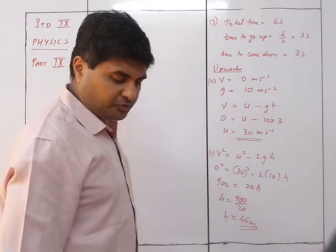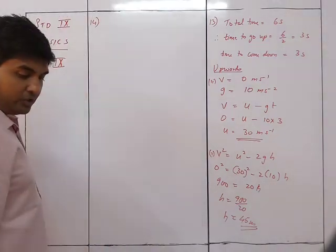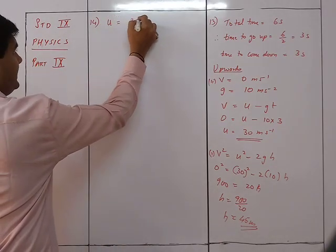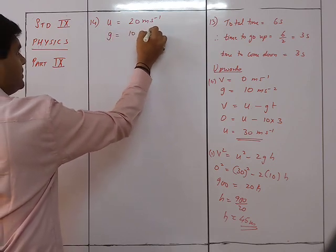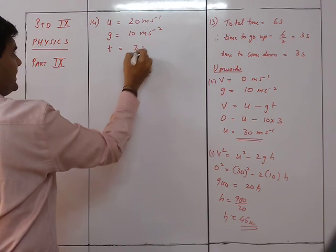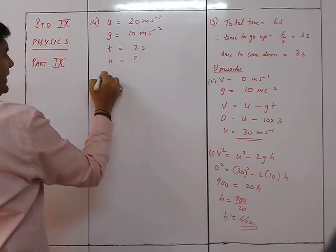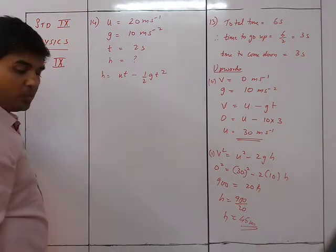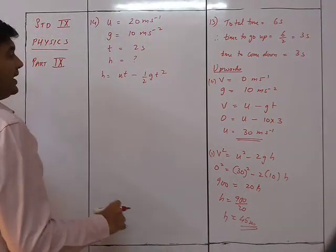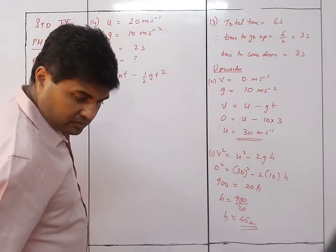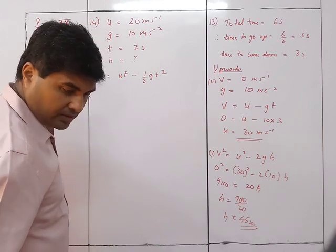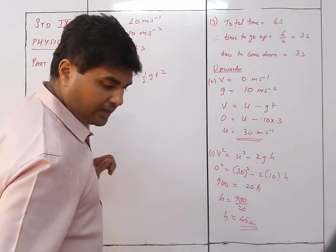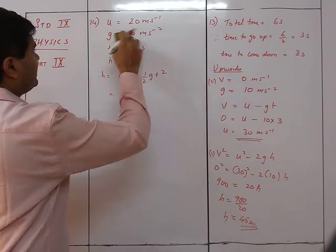Question 14: A pebble is thrown vertically upwards with a speed of 20 m/s. How high will it go? Initial velocity u = 20 m/s, g = 10 m/s². Since it is thrown vertically upwards, v = 0 at the maximum height. Using v² = u² − 2gh: 0 = 400 − 20h.